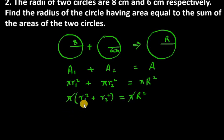And you are left with r₁² + r₂² = R². r₁ is 8, so we have 8 squared. r₂ is 6, so 6 squared. Then we have to find R.